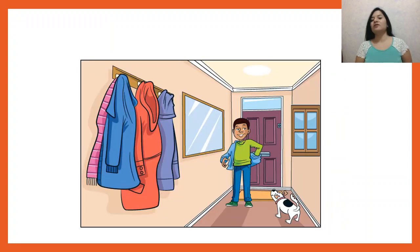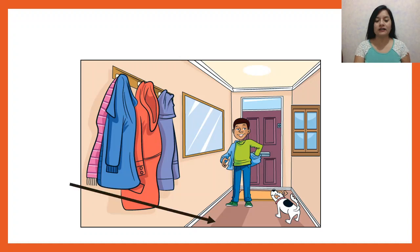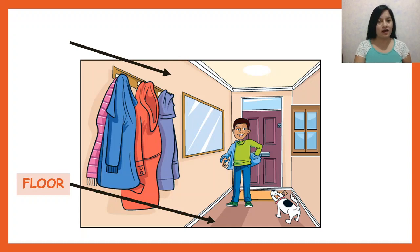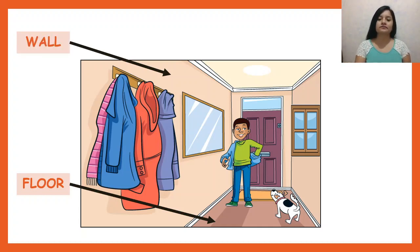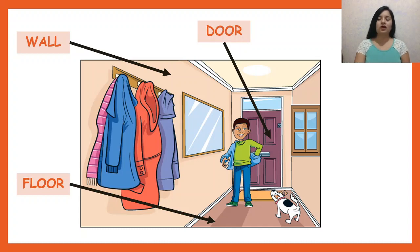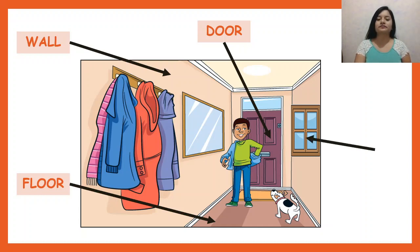Now I will mention some words that we can see in our houses. For example, this part of our house is the floor. This part of our house is the wall. Also, when you enter a place, you have a door. Or maybe to get some fresh air, you have a window. Remember: floor, wall, door, and window.